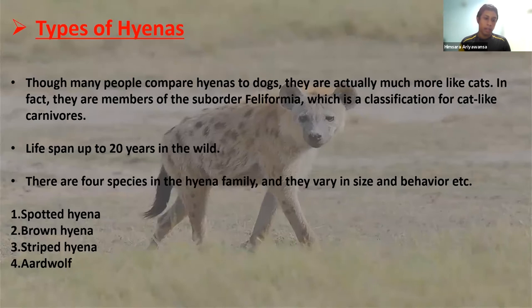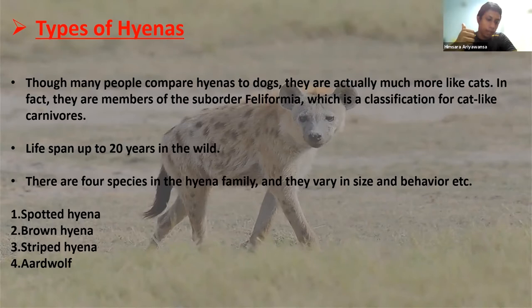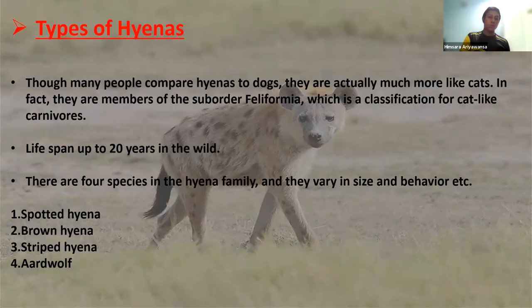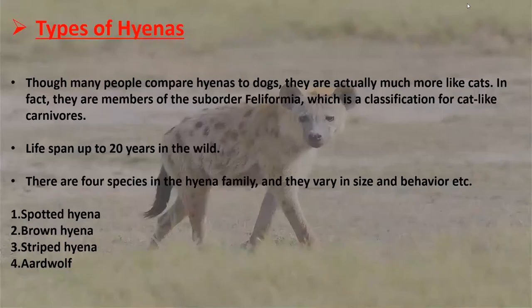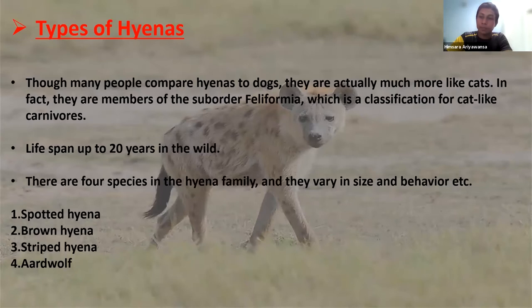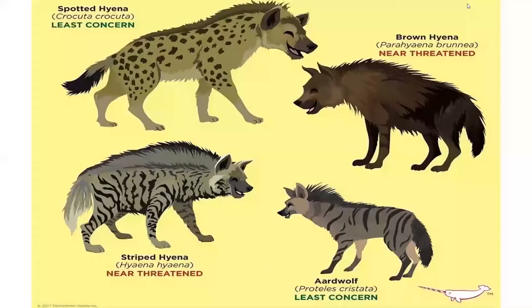There are about four species of hyenas. Just as dogs have different breeds, hyenas also have different species. The first is the spotted hyena, the second is the brown hyena, the third is the striped hyena, and the fourth is the aard wolf. The most common hyena is the spotted hyena.